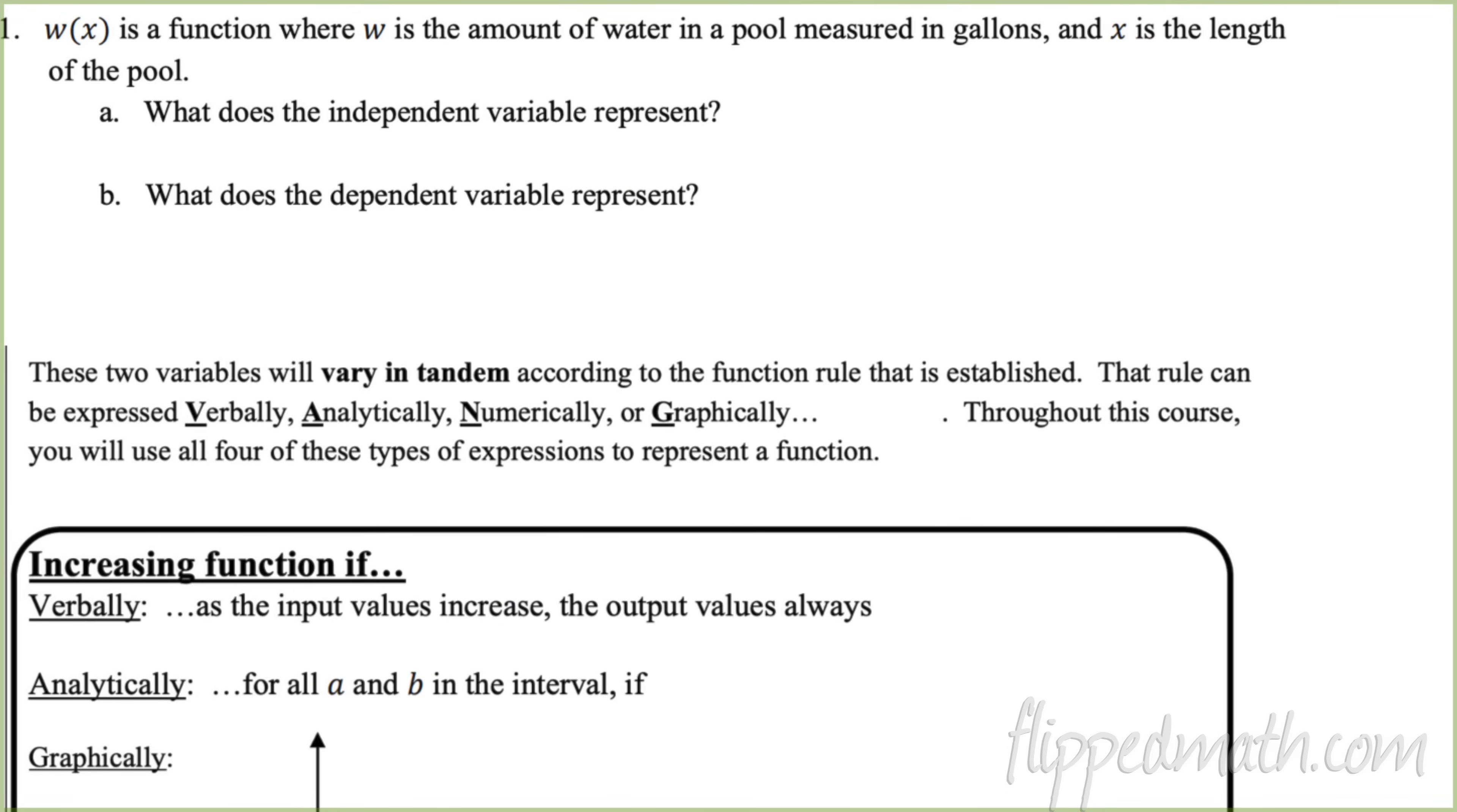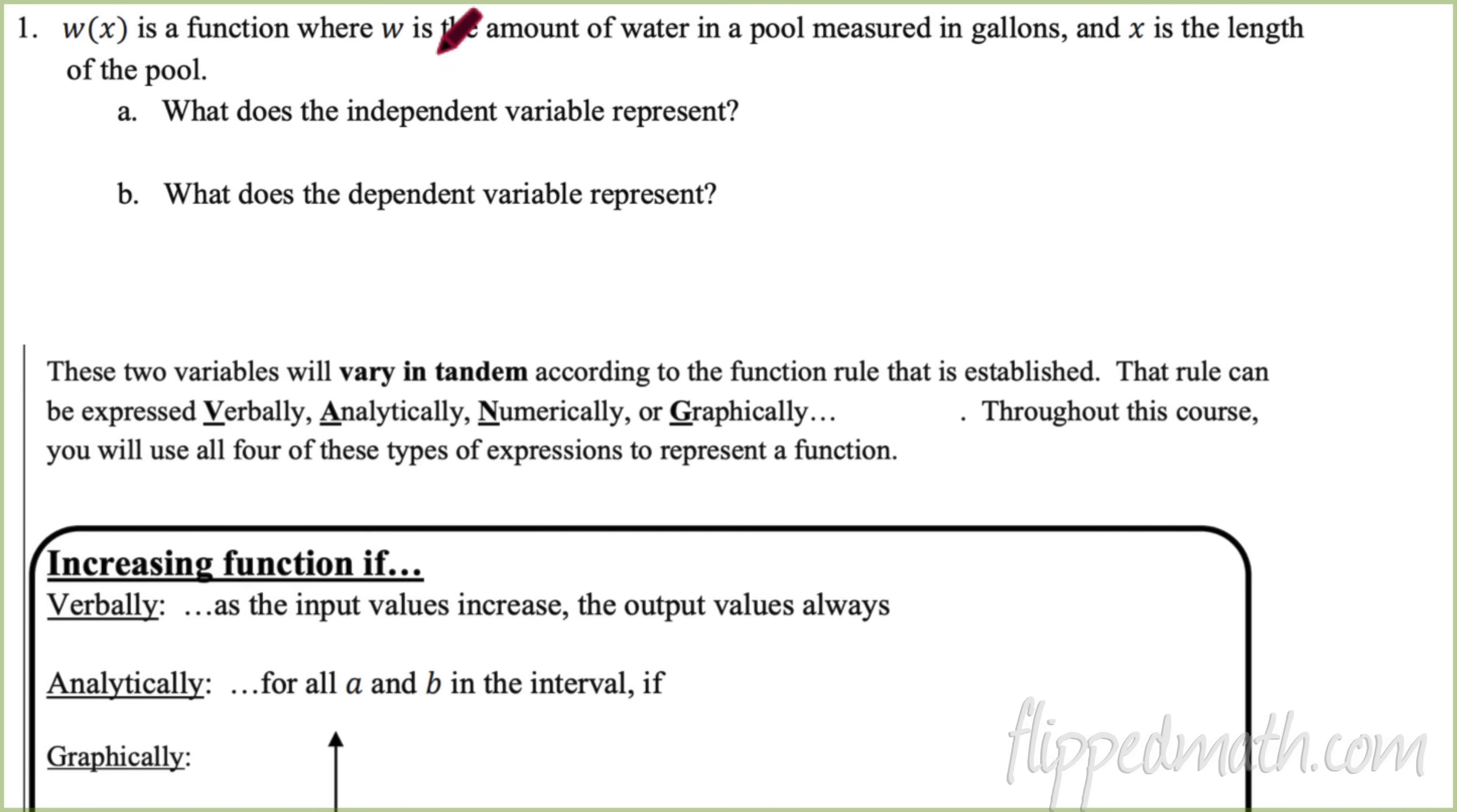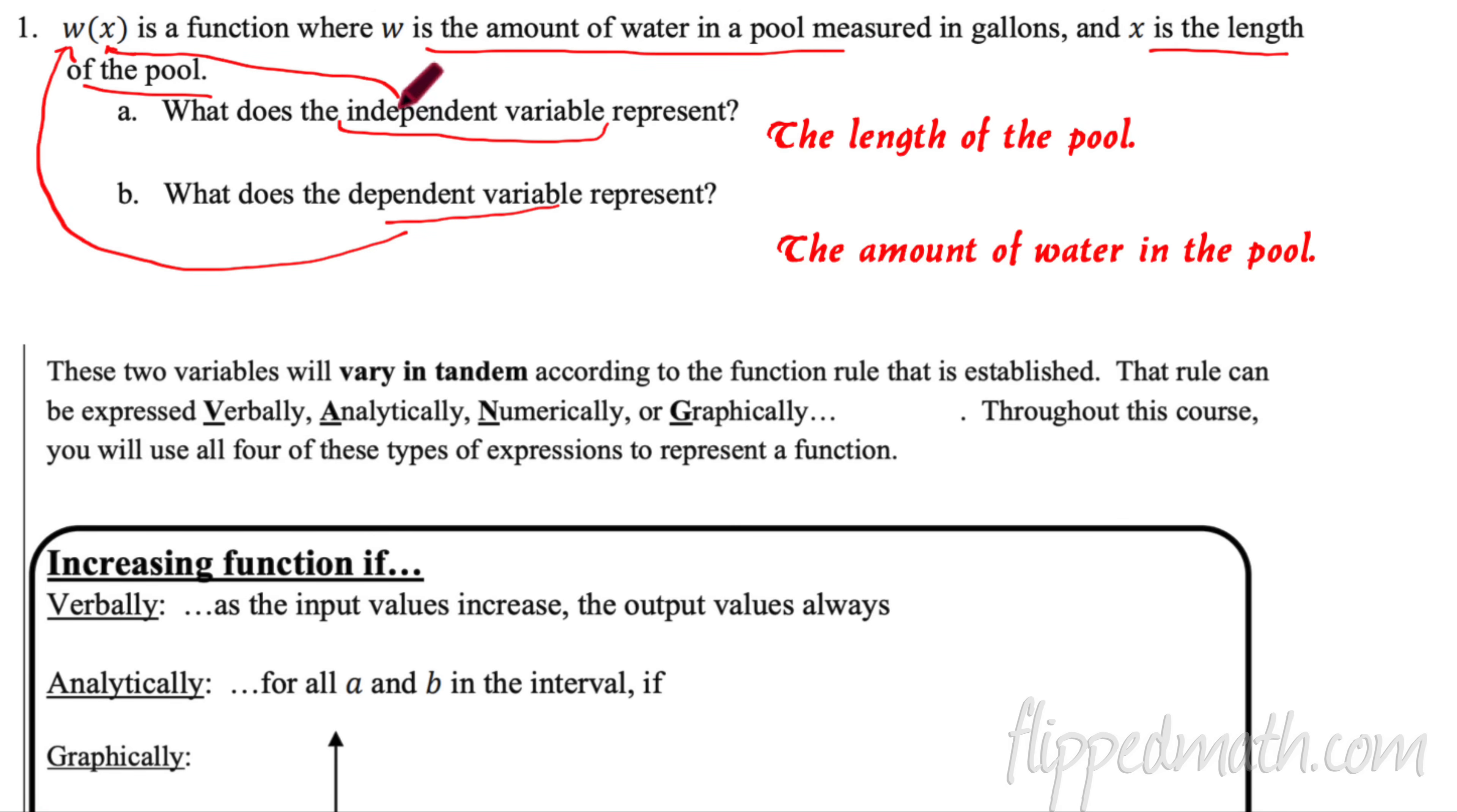So let's practice with the number one here. It has new variables. W of X is a function where W is the amount of water in a pool measured in gallons and X is the length of the pool. What does the independent variable represent? All right, well this is not a trick question. Remember independent variable, that is the input. So that's going to be right here, that's the X. So it represents in this scenario the length of the pool. So that's what the independent variable represents. And then part B is the dependent variable. What does that represent? Well, dependent variable is going to be the first variable here. It's the W and the W is the amount of water in the pool measured in gallons.